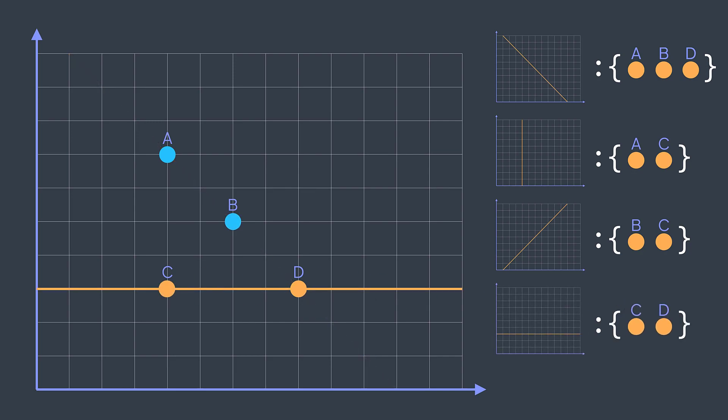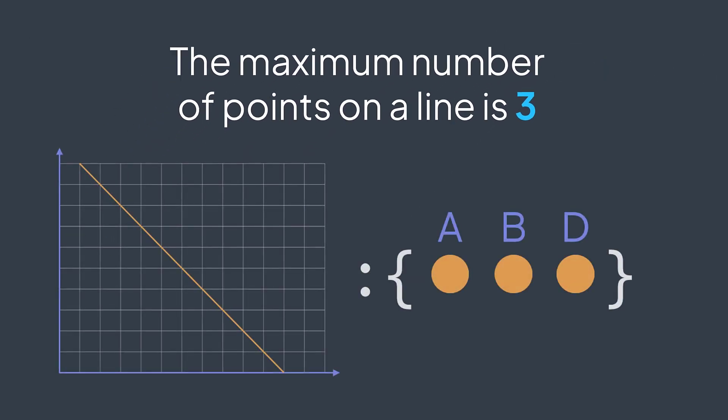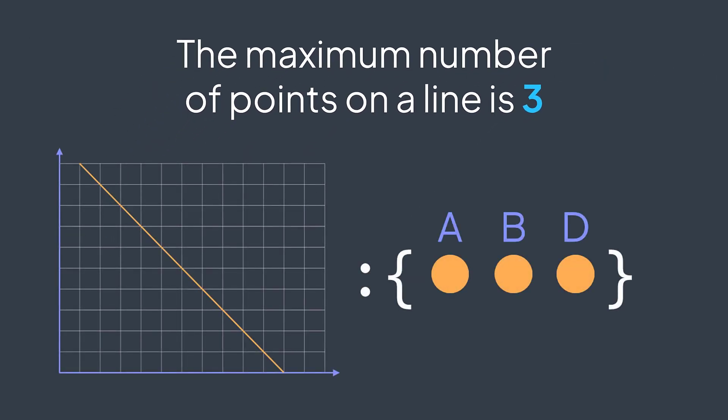After doing so for all couples, we just check the one with the most points in the hash table. Its length represents the max number of points on a line. But how do we represent a line, and how do we find the common line of two points?